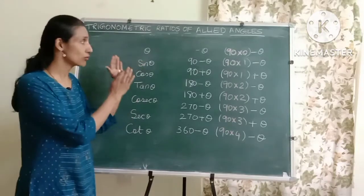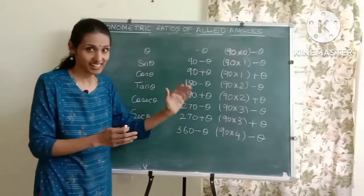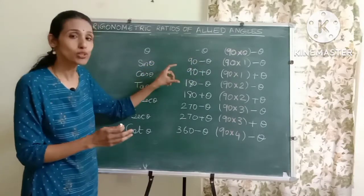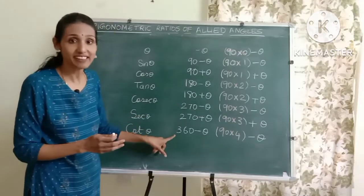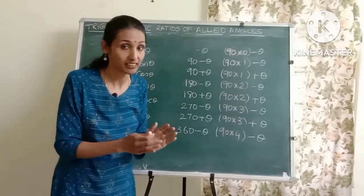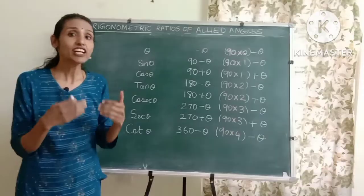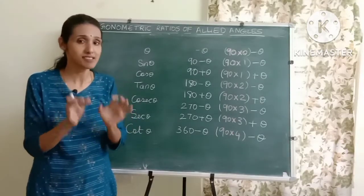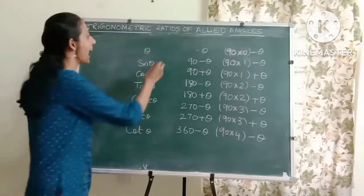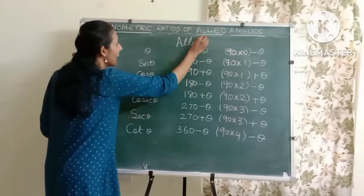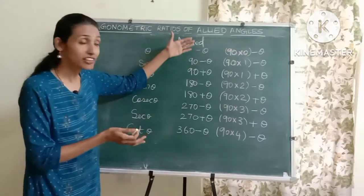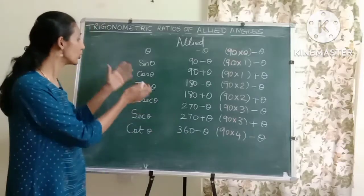Using this same value of theta, I can form many other angles like minus theta. I can add or subtract 90 to theta, I can also do the same with 180, 270, and 360. These are all multiples of 90, which I am either adding or subtracting to theta. These angles that are formed — their trigonometric ratios are found to be very similar to the trigonometric ratios of theta, so these angles are known as allied angles.